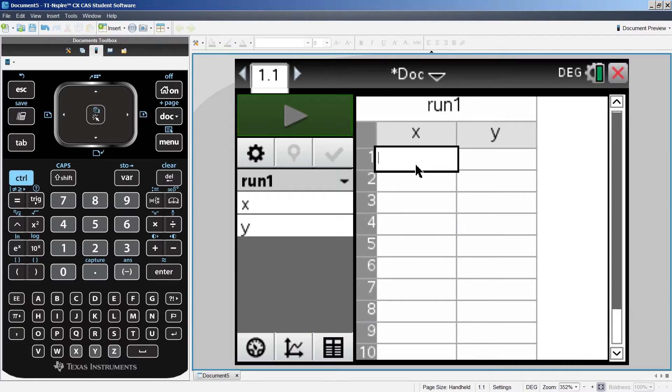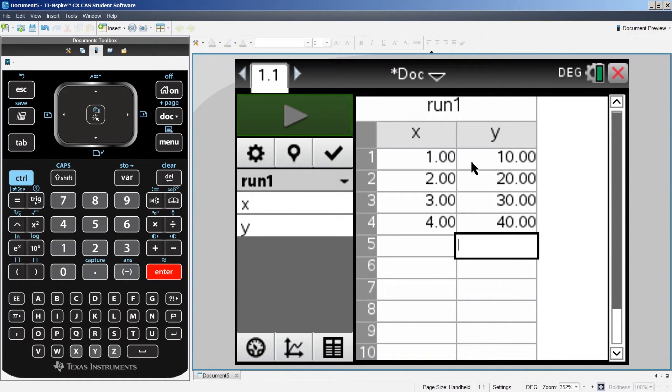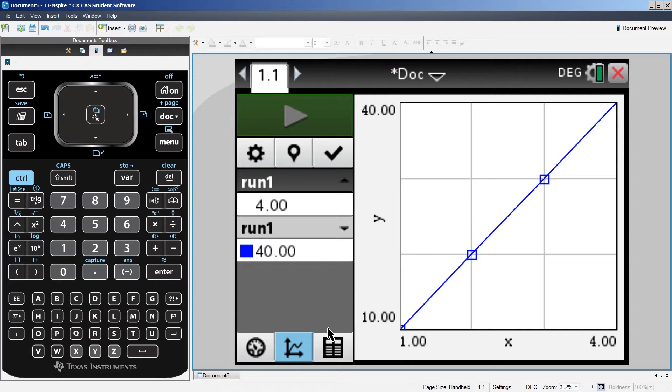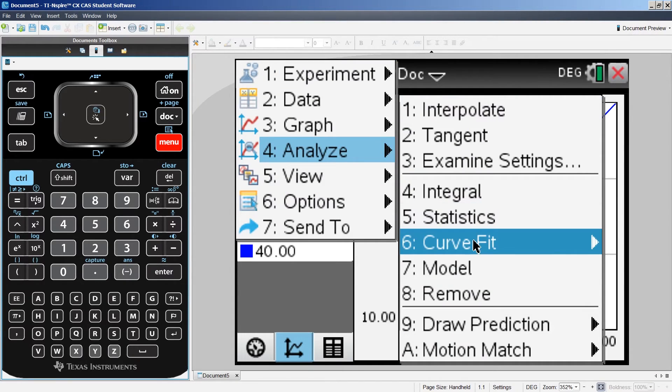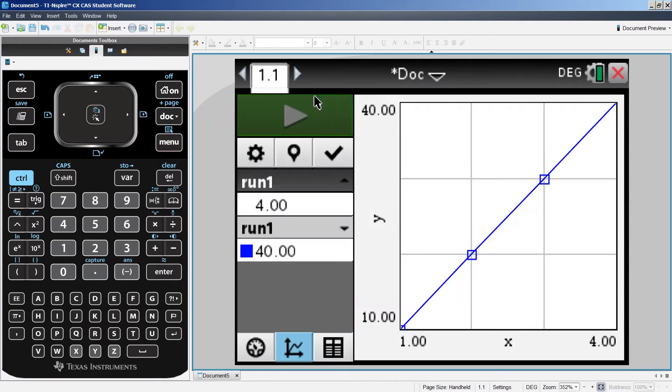You input the values, for example 1, 2, 3, 4 and you input the Y values and you have 10, 20, 30, 40 and you go to the graphics section and finally you have the line and to know the slope of the line, menu and analyze, curve fit and linear.